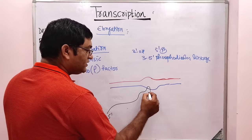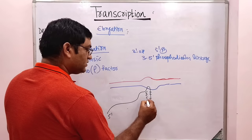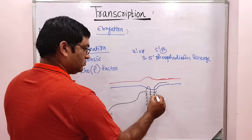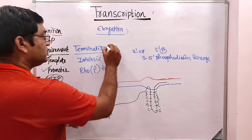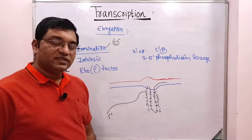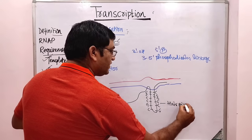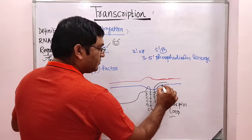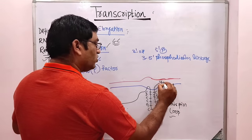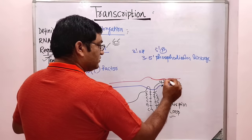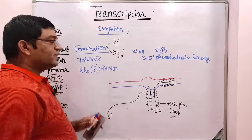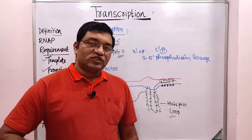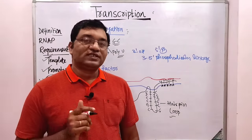There is a region that is rich in G and C base pairs. Due to this GC-rich region there is hairpin formation because of complementary base pairing — loop formation. This hairpin acts as a signal for termination. And there is a poly-A in the DNA template strand which results in poly-U in the RNA, and that triggers the termination. So these are the two intrinsic signals for the termination process: GC-rich segment with formation of a hairpin loop, and poly-U in the newly synthesized RNA that acts as a termination signal.